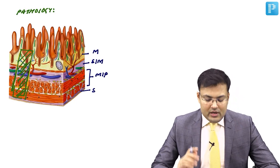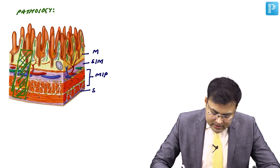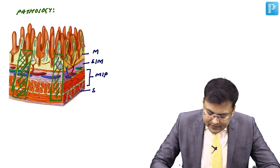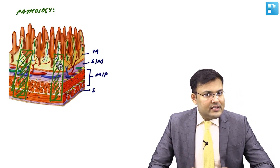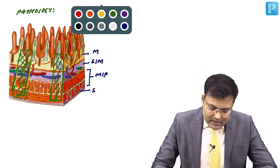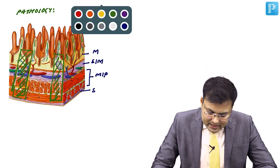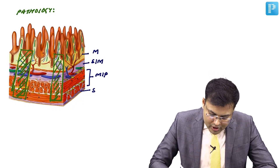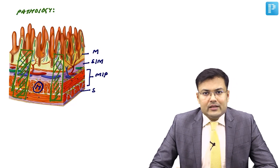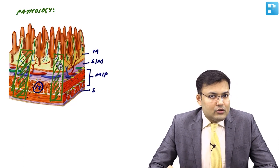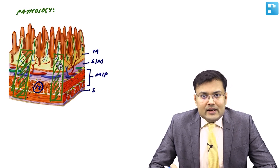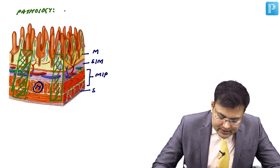In Crohn's disease, in between the segments of diseased bowel there are also healthy areas. These normal areas in between diseased segments are called skip lesions. So there are normal areas of bowel and diseased areas alternating.